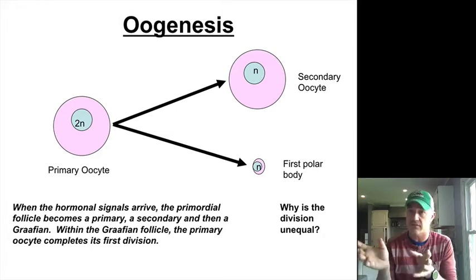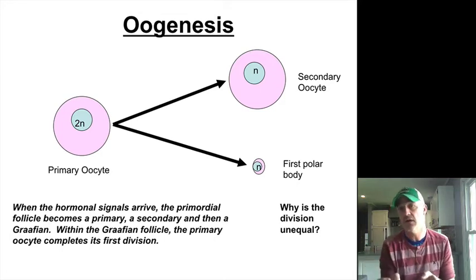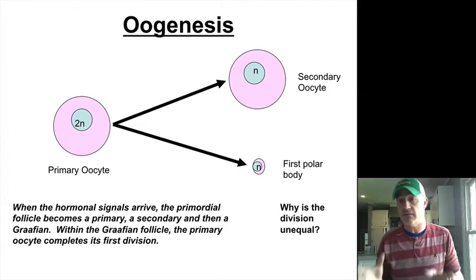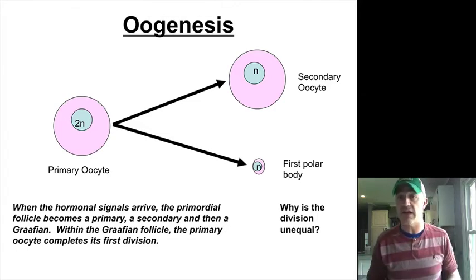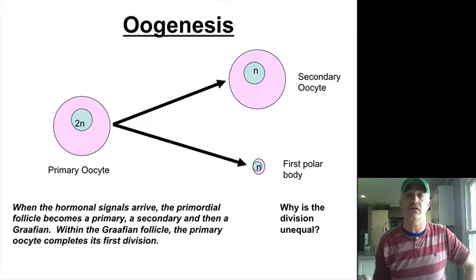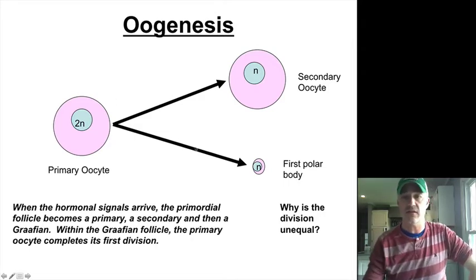Because of this, the oocyte — we know the sperm cell is basically just genetic material strapped to a motor — all the organelles and everything else need to be in that oocyte. Because of this, we need a much larger cell. So what you get is this unequal division of the cytoplasm and organelles, where you get what's called a polar body.